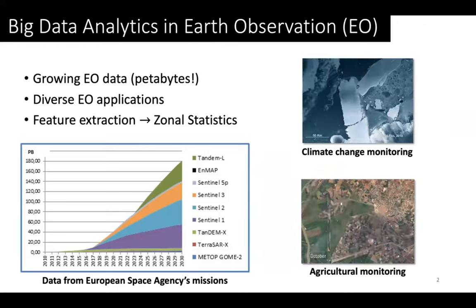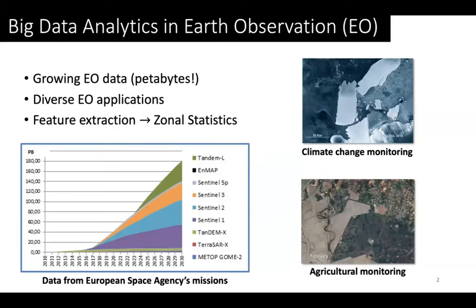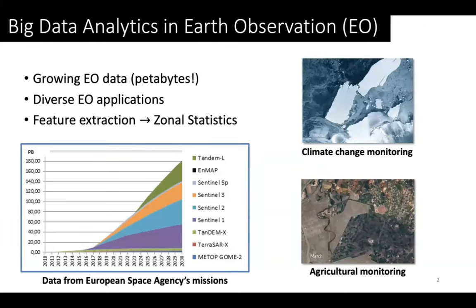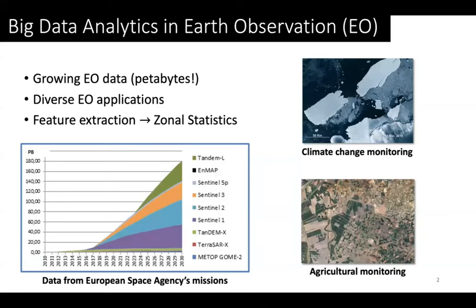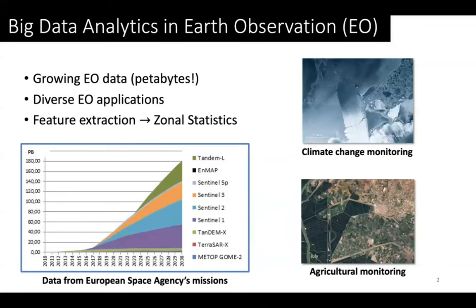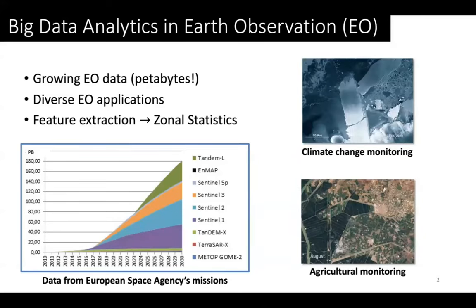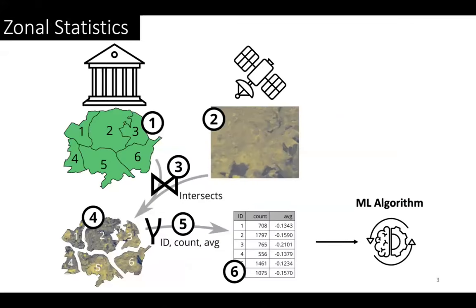In these applications, extracting meaningful features from satellite data often involves performing an operation called zonal statistics. On a high level, zonal statistics groups image pixels in different zones and calculates statistics for each zone.